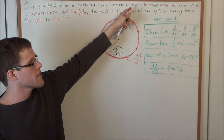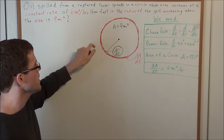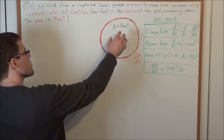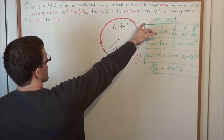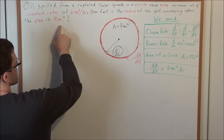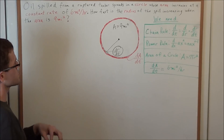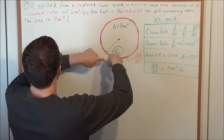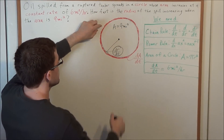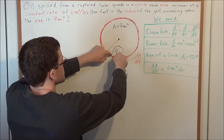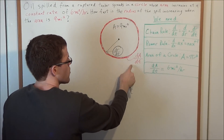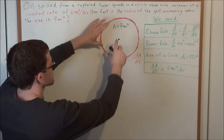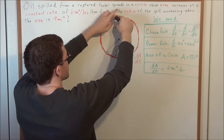I went ahead and highlighted in red all the important pieces of information that we need. So let's take a look at a model of this problem. We have an oil spill in the shape of a circle, and they told us that the area of this spill right now is 9 miles squared. They also told us that the area is increasing at a constant rate of 6 miles squared per hour. This red region represents that change in area over time — every hour it's gaining another 6 miles squared in area of oil.